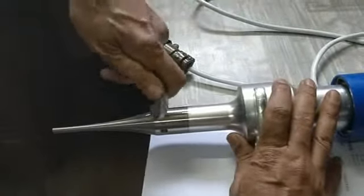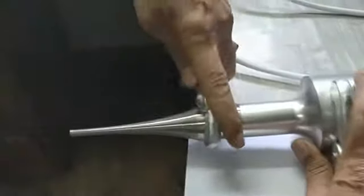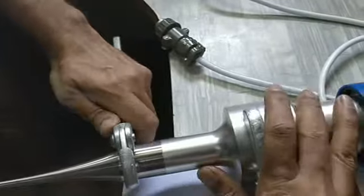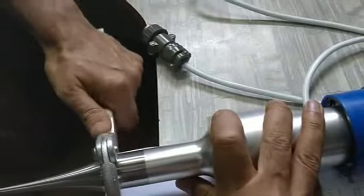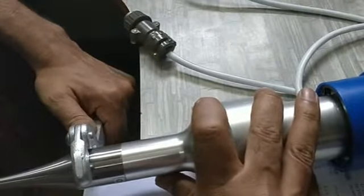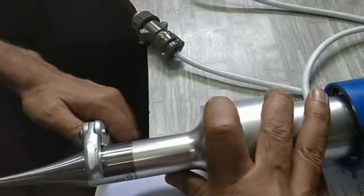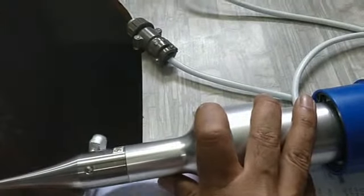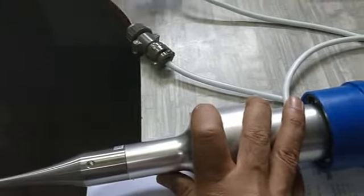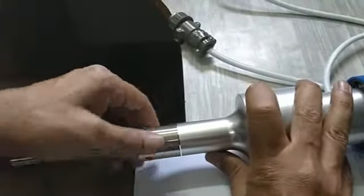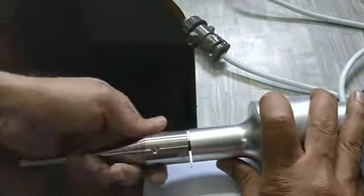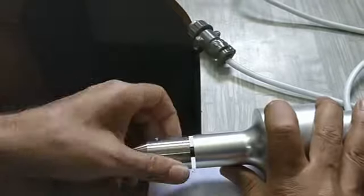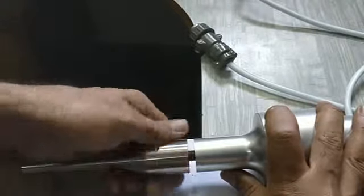To open the probe, we will have to fix the smaller tool like this and move it anticlockwise. Initially this may be a little bit tight. With the help of the tool, we will make 2-3 turns, and after that you can easily take it out by hand only.